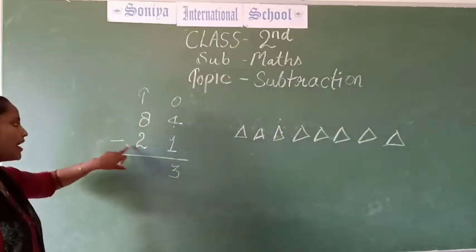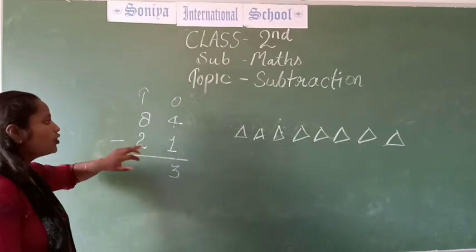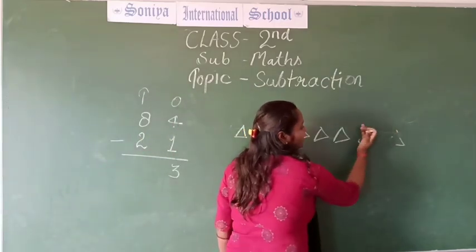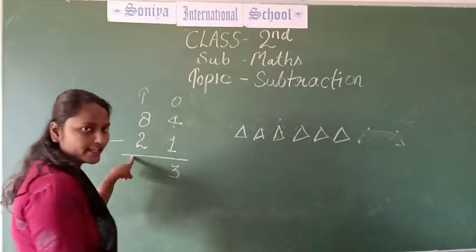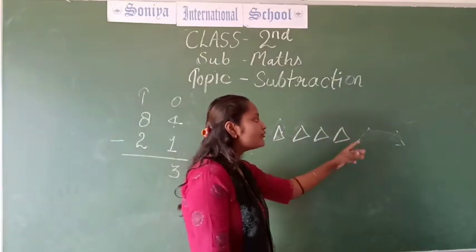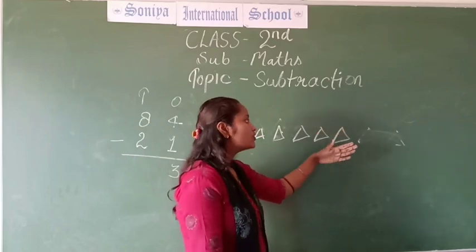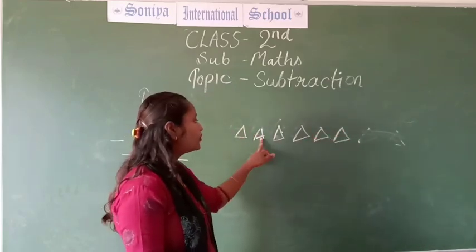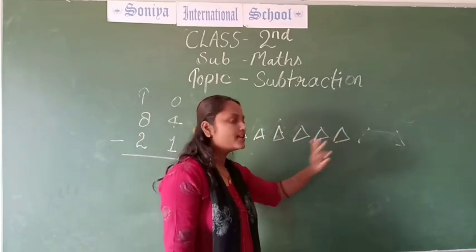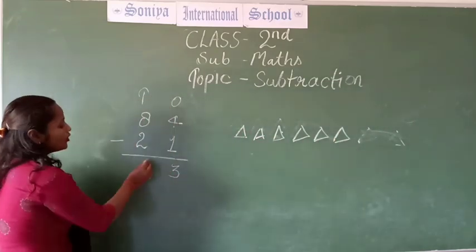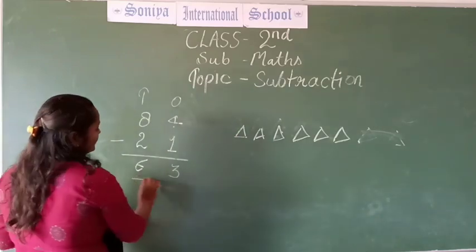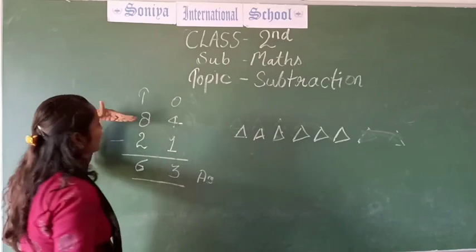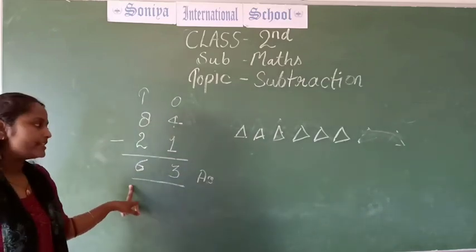And this is 2 and the sign of minus. So we should take away these 2 triangles. How many are left? Let's count: 1, 2, 3, 4, 5 and 6. This is 6. So we are writing 6. Your answer will be 63. So 84 minus 21 will become 63.